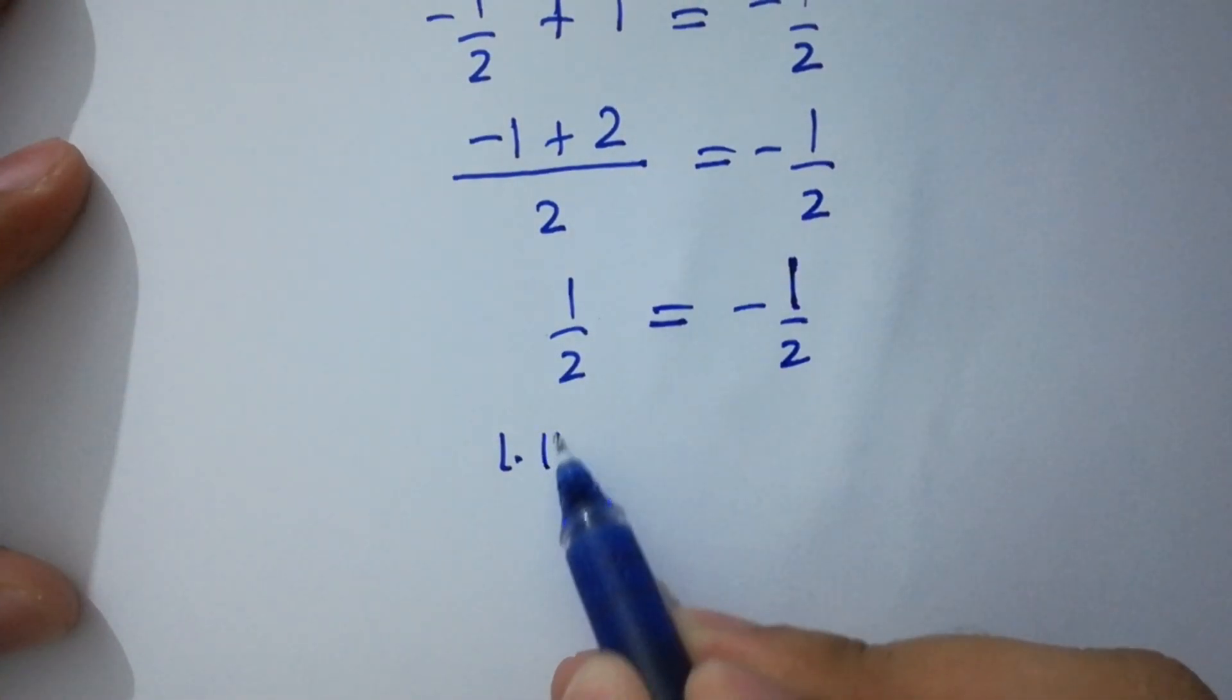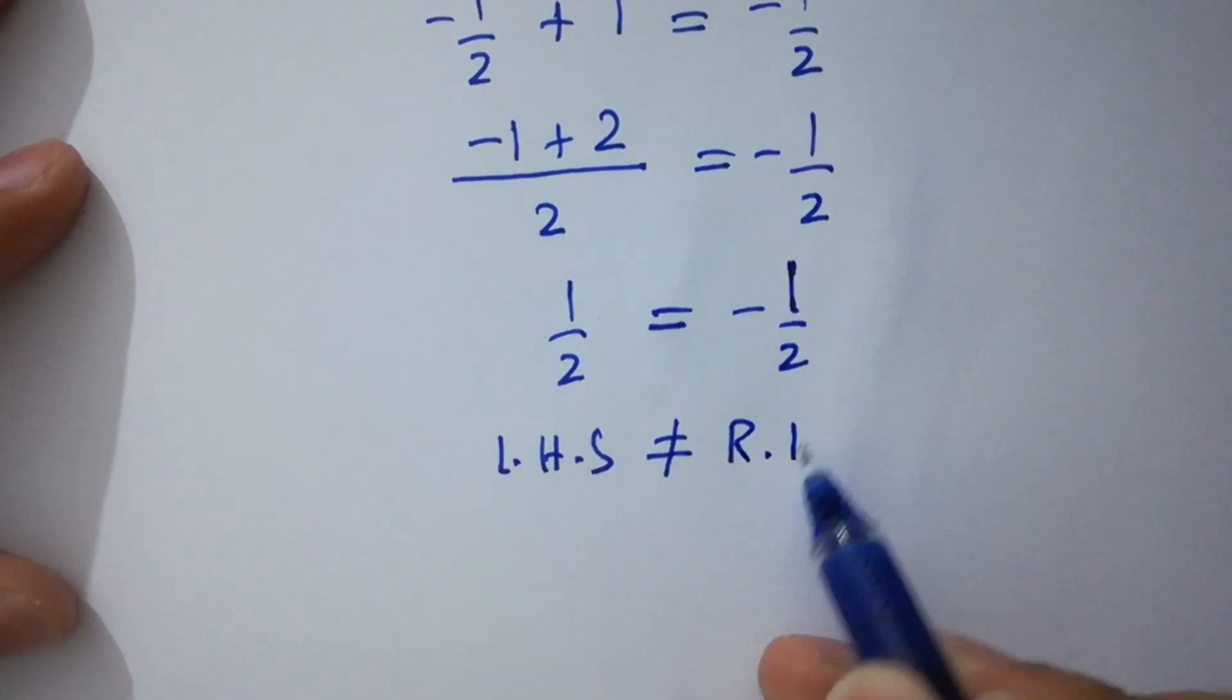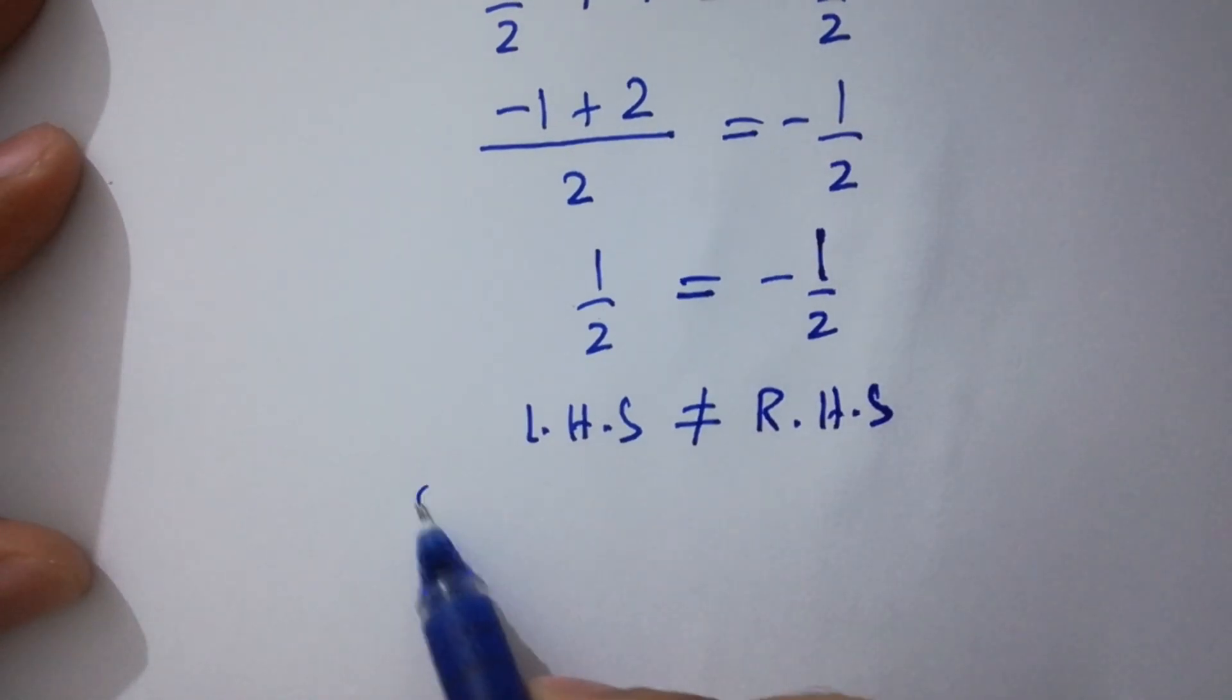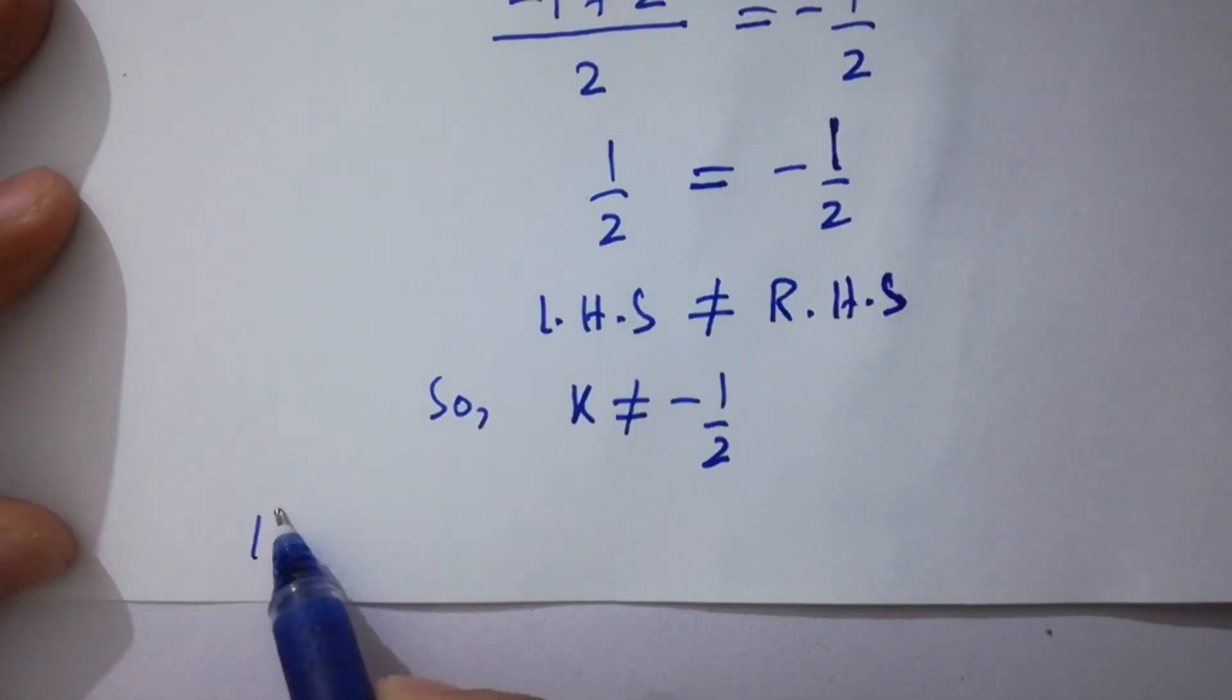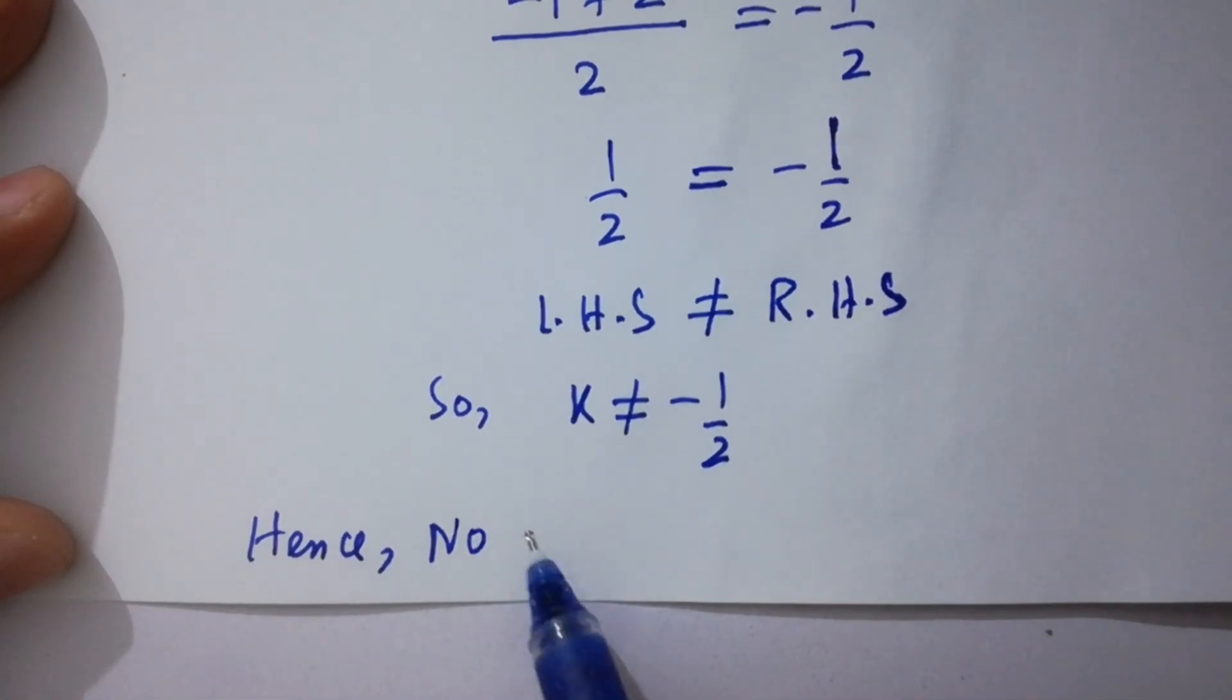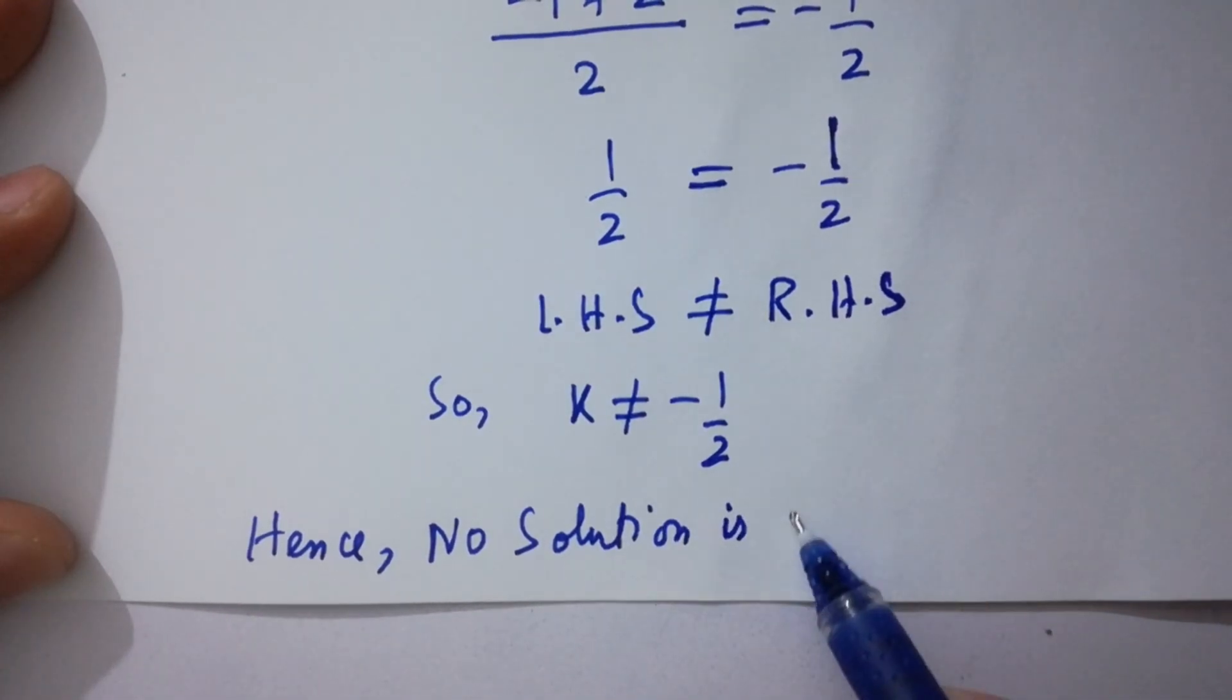You can see, left hand side does not equal to right hand side. So, k does not equal to minus 1 over 2. Hence, no solution is possible.